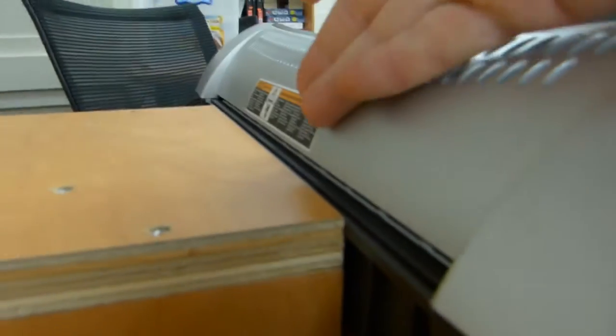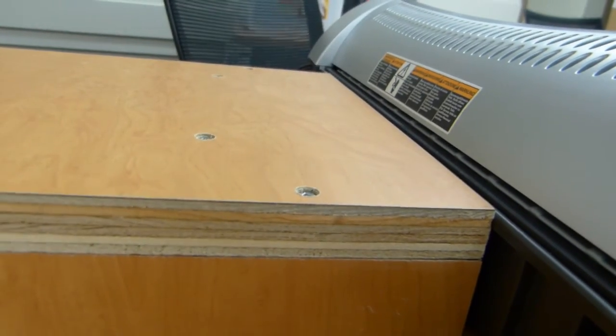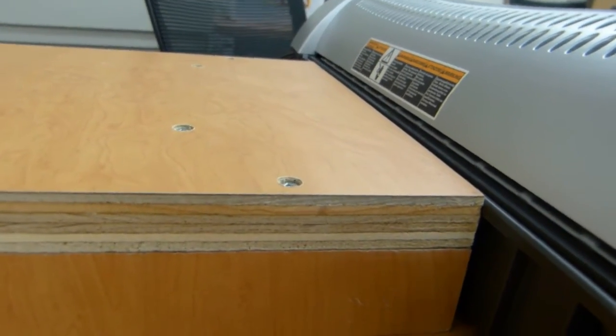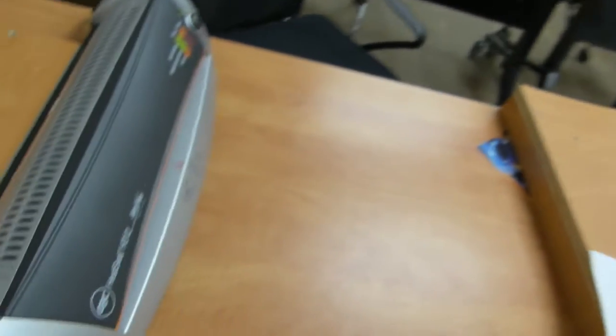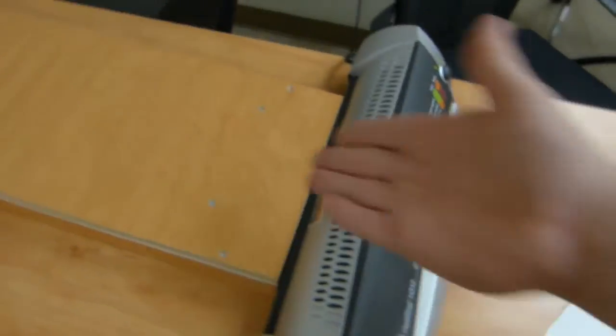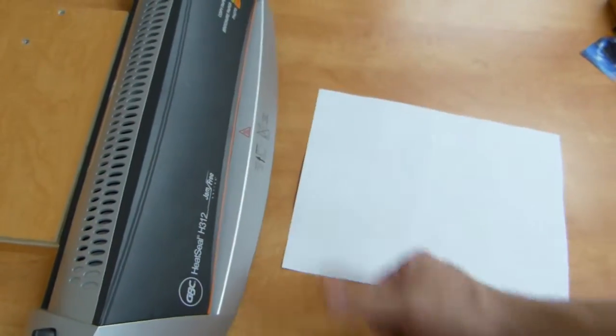Where the laminator comes out, it comes out without being stressed or crooked. Because cutting the machine is not an option, we need to make a sheet of plywood or an outfeed table made of plywood that matches the curvature of the machine.